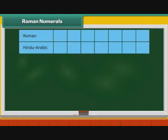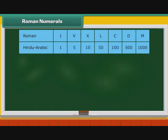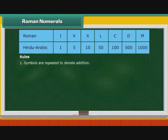The numbers we studied so far are the Hindu-Arabic numerals. Let us now look at Roman numerals. Seven symbols are used to form Roman numerals: I, V, X, L, C, D, and M. They correspond to the Hindu-Arabic numerals 1, 5, 10, 50, 100, 500, and 1000. Let us first list the rules of the Roman system.